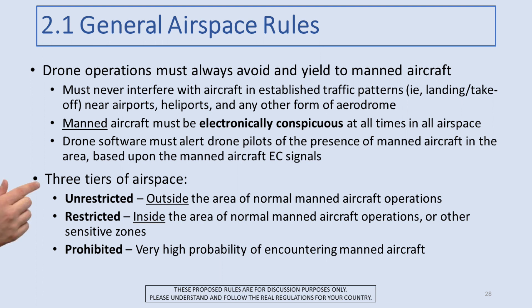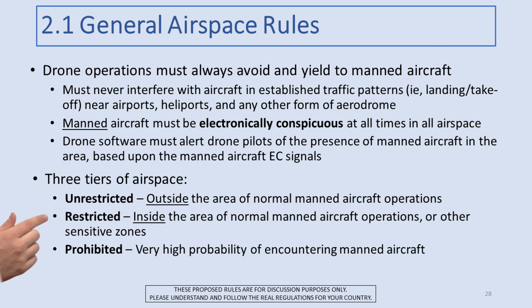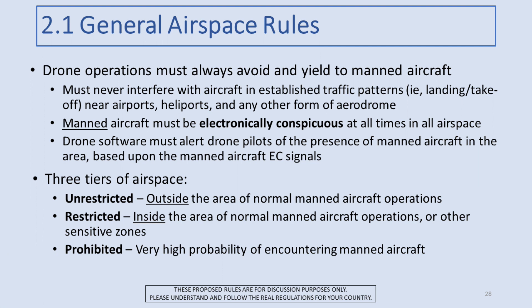I'm defining three tiers of airspace. Keep in mind that when I use the terms restricted or unrestricted, this is in the context of drone operations. Unrestricted is generally speaking outside the area of normal manned aircraft operations. Restricted is inside the area of normal manned aircraft operations or other sensitive zones. And finally, prohibited is where there's a very high probability of encountering manned aircraft, such as around airports.